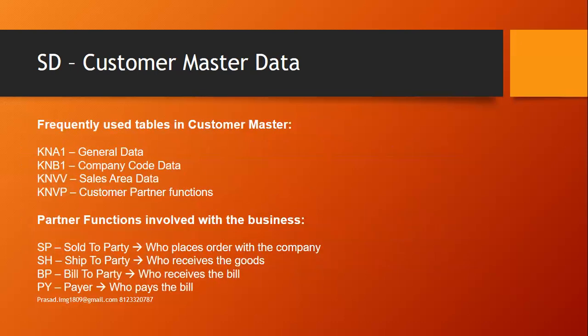There are a few frequently used tables in customer master: KNA1 for general data, KNB1 for company code data, KNVV for sales area data, and KNVP for customer partner functions.